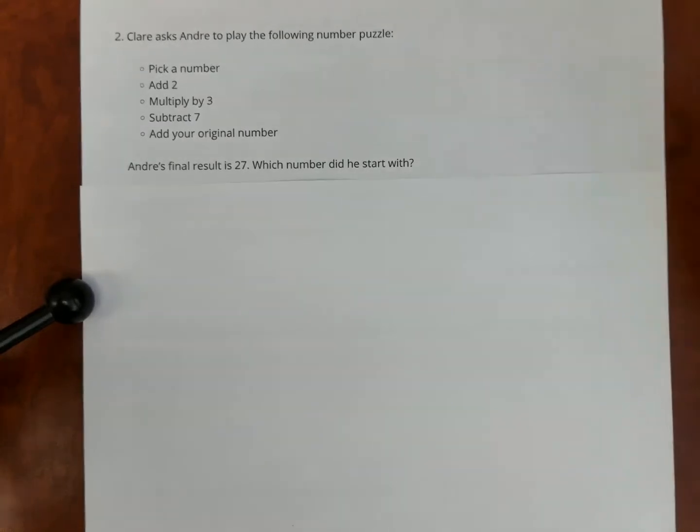Okay, so let's see what the problem says. Claire asks Andre the following number puzzle. Pick a number, add two, multiply by three, subtract seven, add your original number.